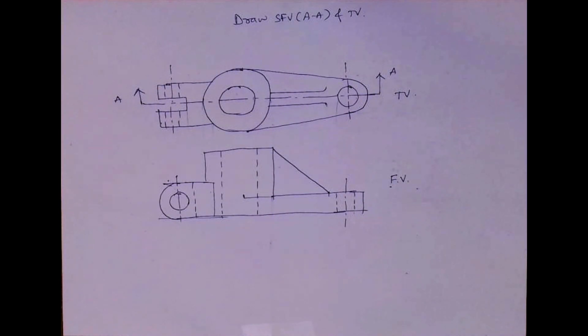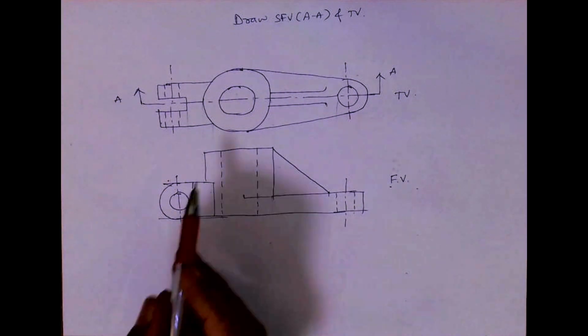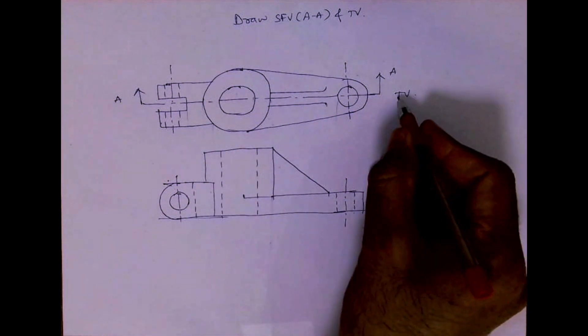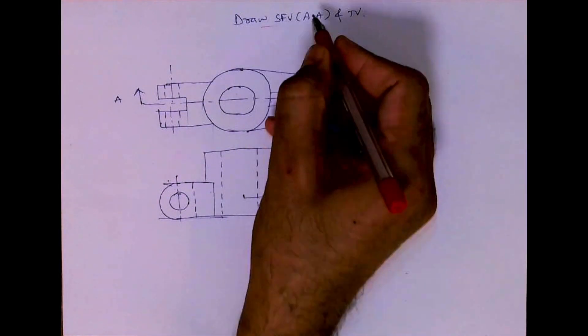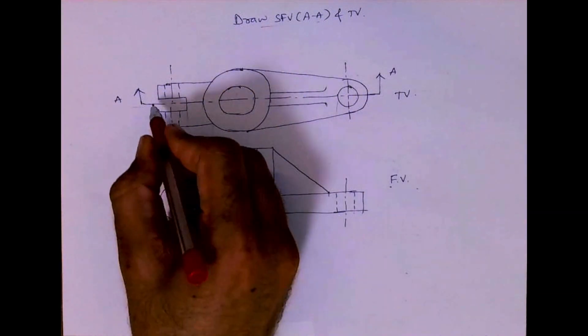Welcome to technical drawing. Today we're going to see this problem in sectional front view. Now see, two views are given: front view and top view. So first we need to draw, and now we need to do sectional front view along A.